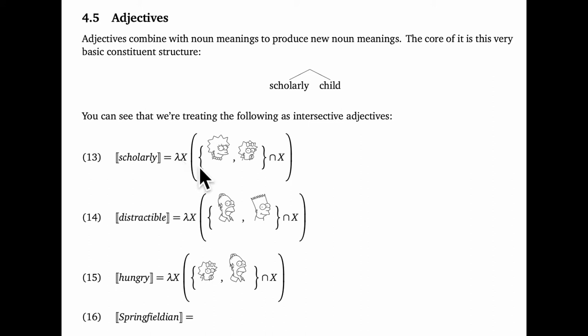So this lambda X here is the open slot, and I've used capital letters for the variable to indicate that this function is not looking for an entity, but rather for a set of entities. When that set comes in, we do our substitution, and we simply do the intersection of the incoming set, whatever it is, with this set here, the set Maggie and Lisa.